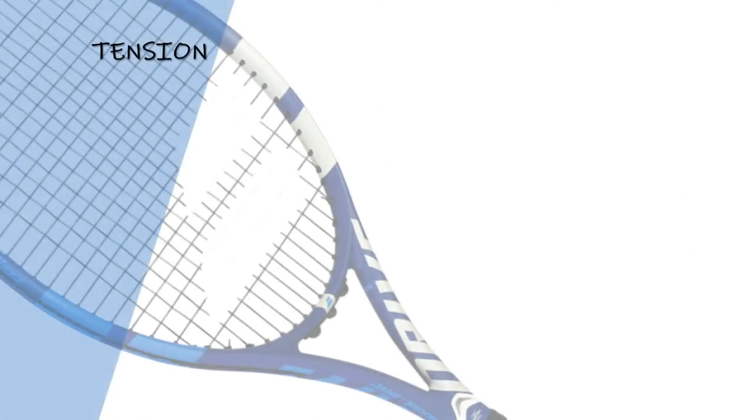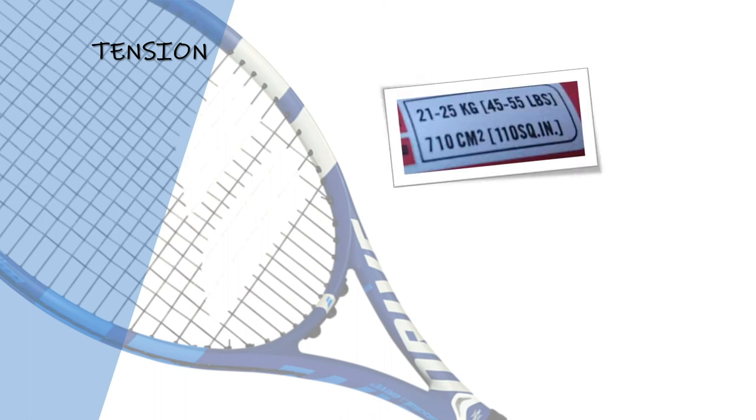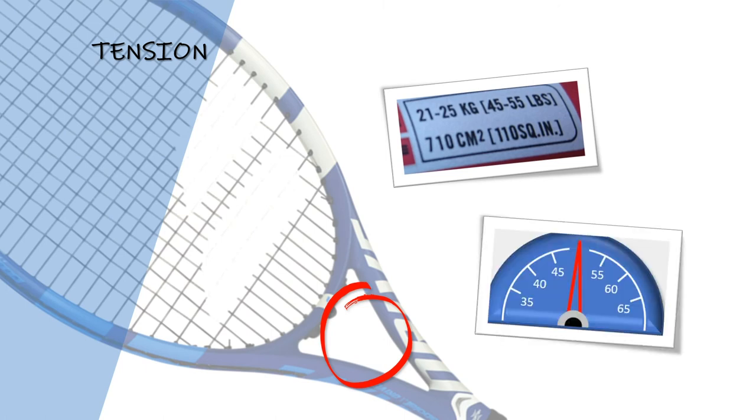For many players, string tension is an overlooked aspect of their tennis racket. The indication for recommended tension ranges can often be found at the throat of the racket on the inside. For the most part, tensions will start as low as 18.14 kilograms, or 40 pounds, and end around 30.84 kilograms, or 68 pounds. If the customer is getting their racket strung for the first time, and they're not sure what tension they would like, suggest that they start with a tension that is right in the middle of the manufacturer's recommendation.